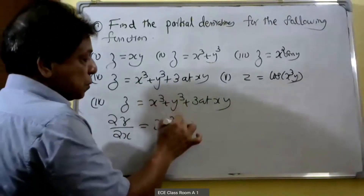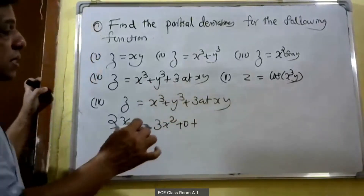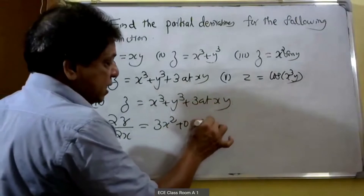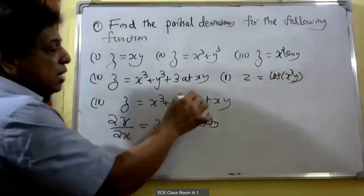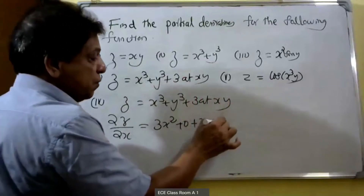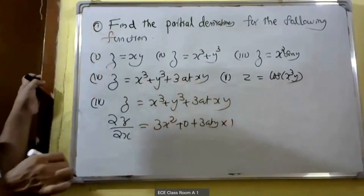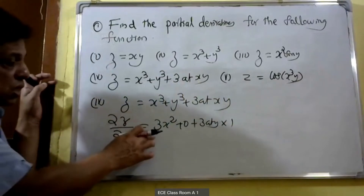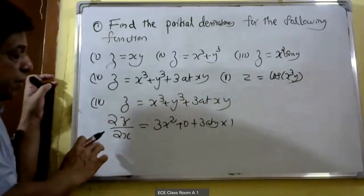For the 3axy term, y is constant, so 3ay into derivative of x, that is 3ay into 1. Therefore ∂z/∂x is equal to 3x² plus 3ay.